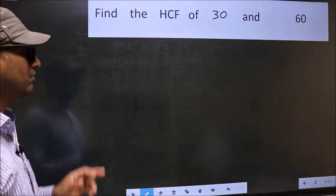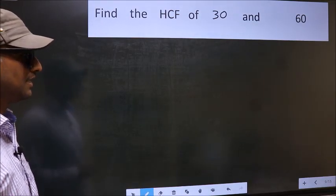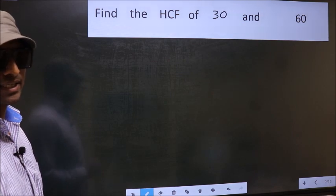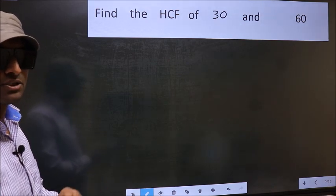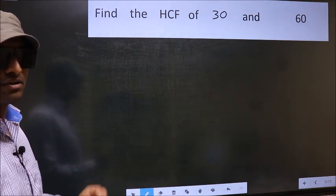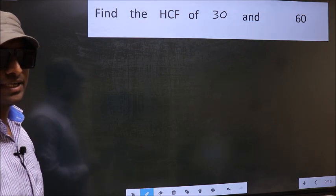Find the HCF of 30 and 60. To find the HCF, we should do the prime factorization of each number separately.